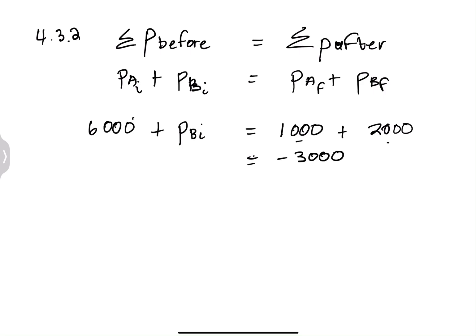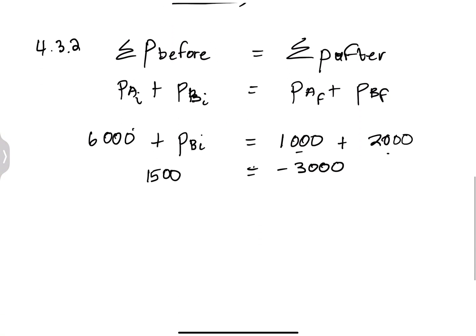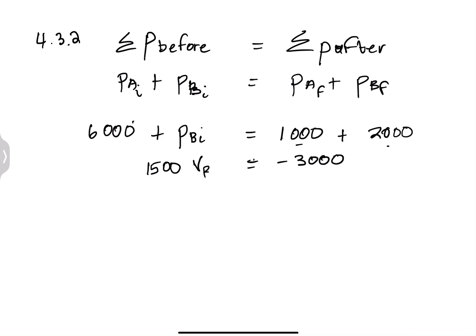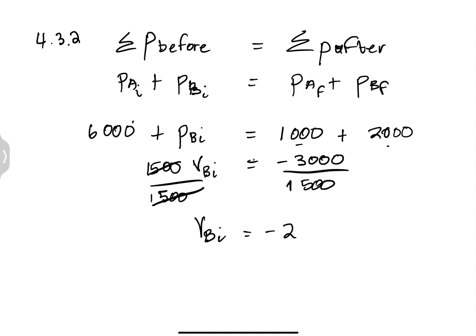To find the velocity, we use p = mv. The mass of Truck B is 1500 kilograms. Dividing both sides by 1500: v_B(initial) = −3000 ÷ 1500 = −2 meters per second. The graph also indicates this negative value. So the speed of Truck B before the collision is 2 m/s, and the negative sign tells us the direction.